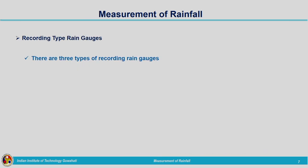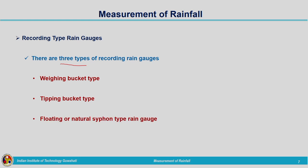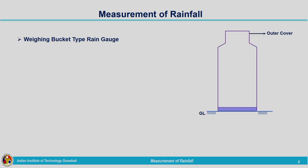The second type is the recording rain gauge. There are three types of recording rain gauges: one is the weighing bucket type, second is the tipping bucket type, and the third is the floating or natural siphon type rain gauge.